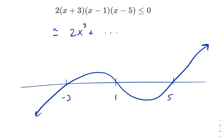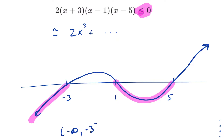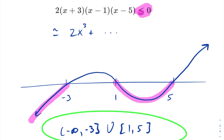This is a rough sketch of our polynomial. We're interested in when the polynomial is less than or equal to 0, which is going to be until we hit negative 3, and then between 1 and 5. Writing this in interval notation, we get negative infinity to negative 3 with a square bracket on negative 3 because of the equality at 0, union 1 to 5 with square brackets. This would be our answer for our degree 3 polynomial when it is less than or equal to 0.